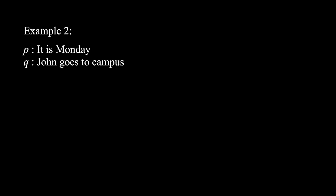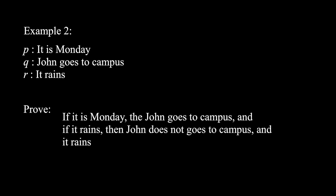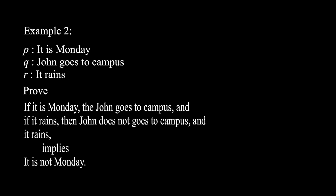Example 2. Let: P be 'it is Monday,' Q be 'John goes to campus,' R be 'it rains.' Prove: (p implies q), and (r implies not q), and r — implies not p. We analyze the problem. The conclusion is not p. The only premise where p occurs is premise A (p implies q), but we need not p. The contrapositive of premise A gives (not q implies not p). We try that approach.